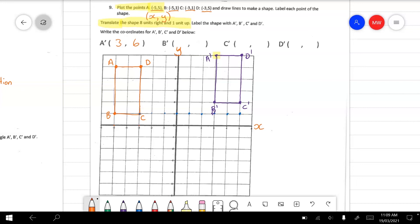To get C, I go across to five and up to two. So this one will be five, two. And finally to get coordinate D dash, I go across to five and up to six. So the coordinates for that one will be five, six.